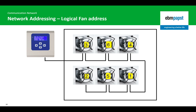In this example, the initial network addressing has allocated numbers in a seemingly random order because the fan serial numbers have not been examined. This issue, however, can be solved when first initializing the network of fans by changing the order and renaming them on the array in a logical sequence. This fan position swapping is an option that can be chosen after the network has been first initialized.